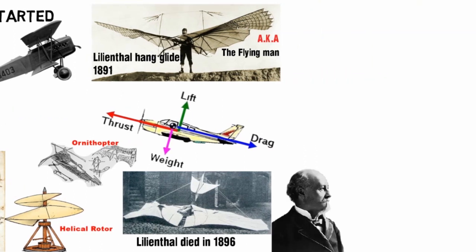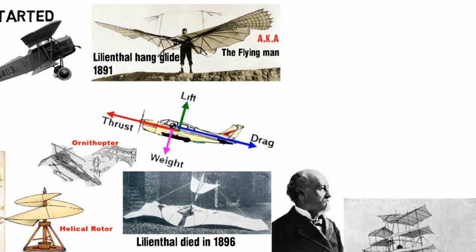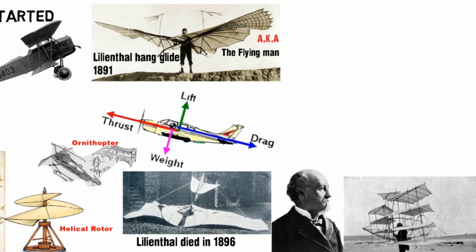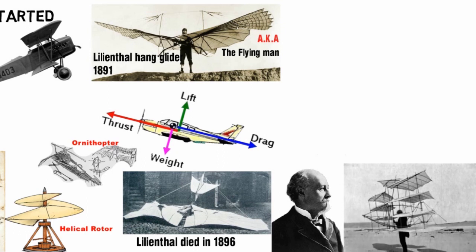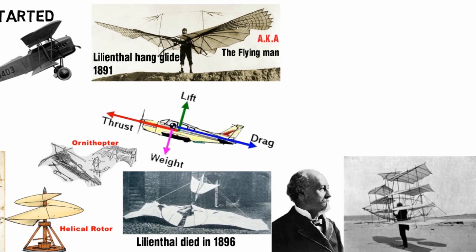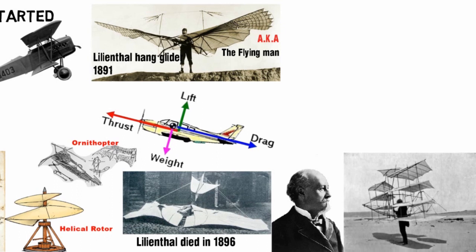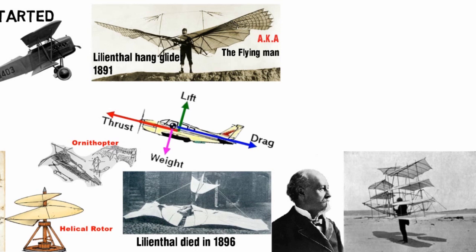American civil engineer Octave Chanute spent a mere decade collecting data from flight experimenters, including Lilienthal's glider design and his flight experiments. The data proved invaluable for Chanute's hang glider experiments during the 1890s, as he figured out the best way of achieving lift is the double-decker strut-wire braced wing structure, a structure that would eventually be of great use to the Wright brothers.